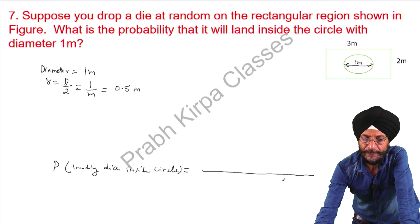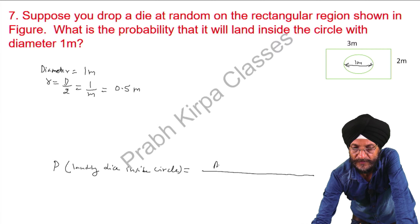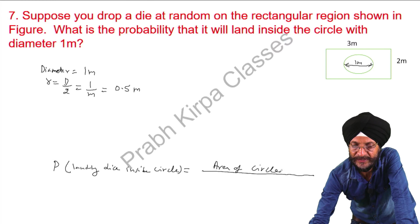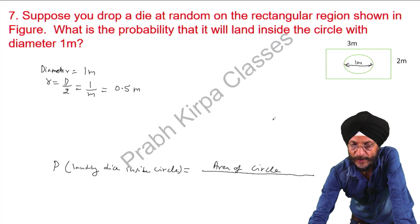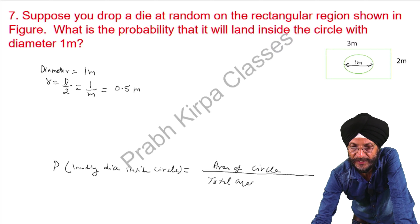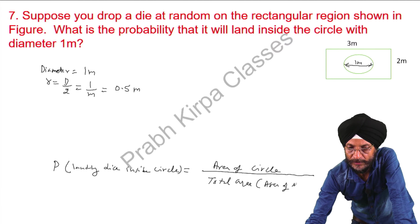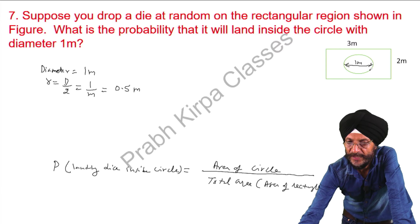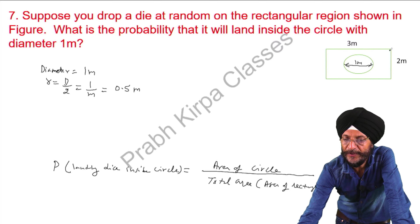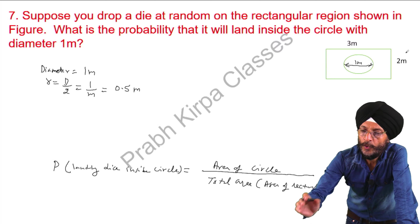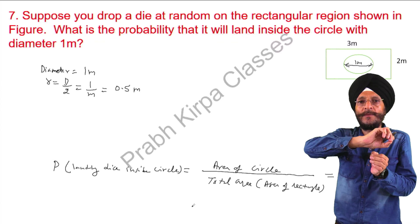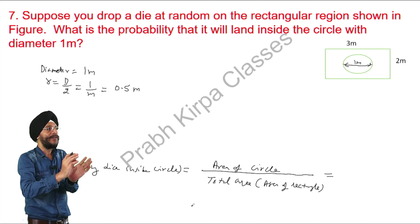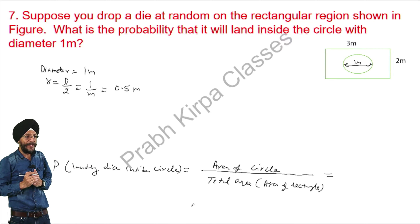How will we calculate it? The area of the circle will be on the upper side (numerator), and the total area — that is the area of the rectangle — will be on the lower side. This area is the favourable outcome, and the total area is the total number of outcomes. We normally use the formula: number of favourable outcomes divided by total number of outcomes. Here, because area is given, we find the favourable area divided by total area.